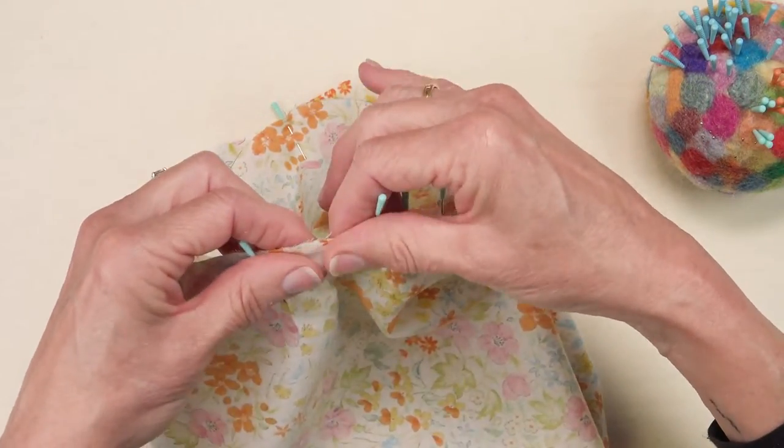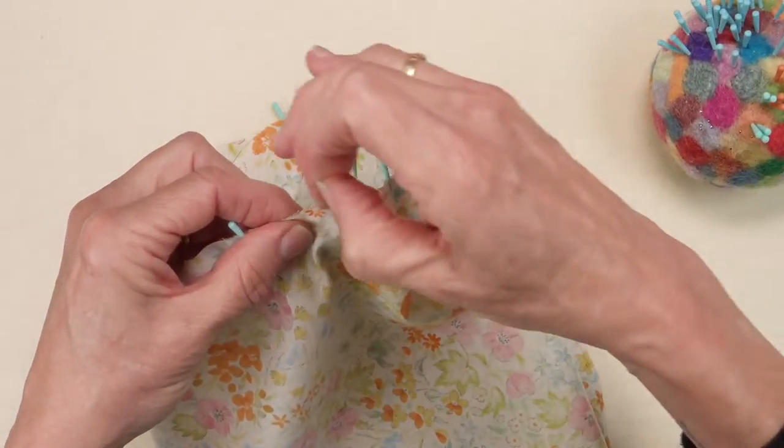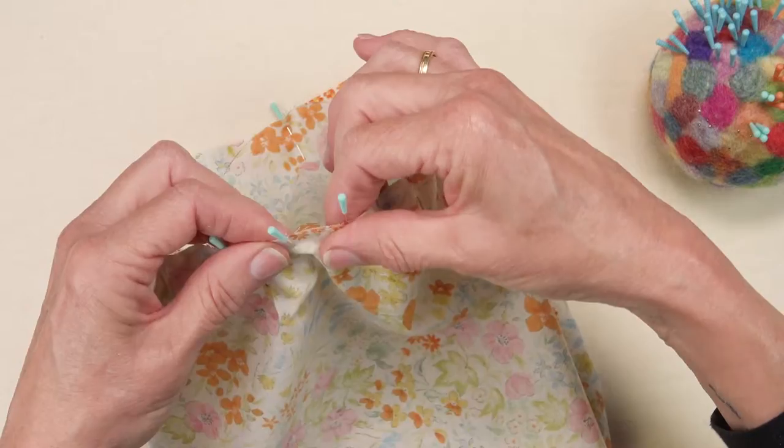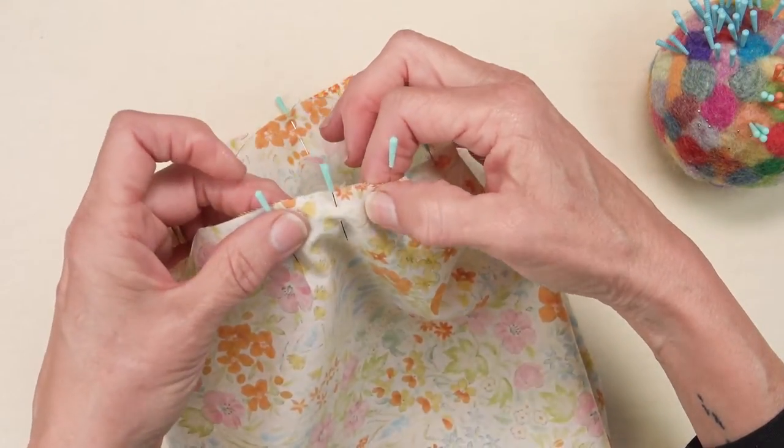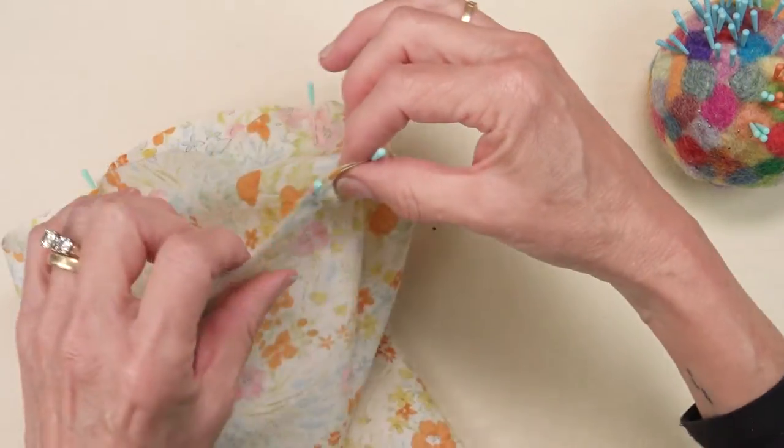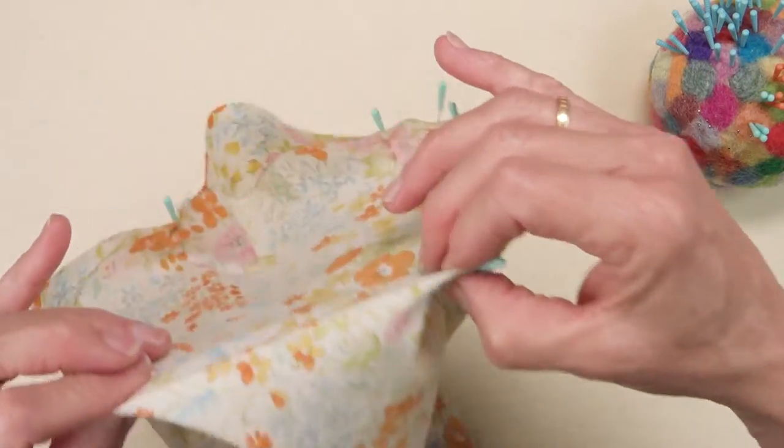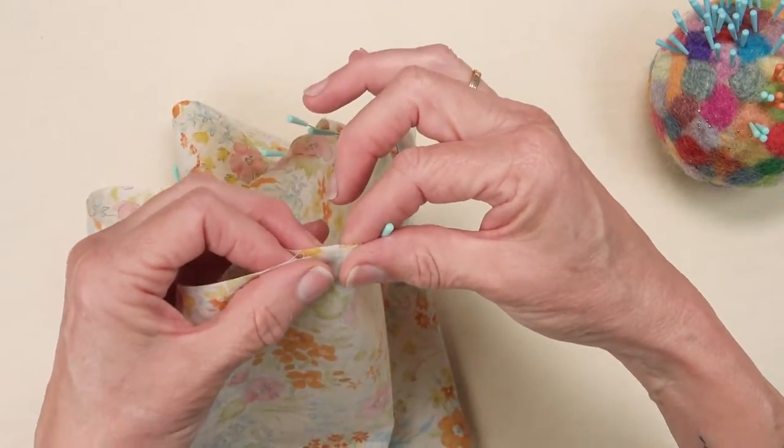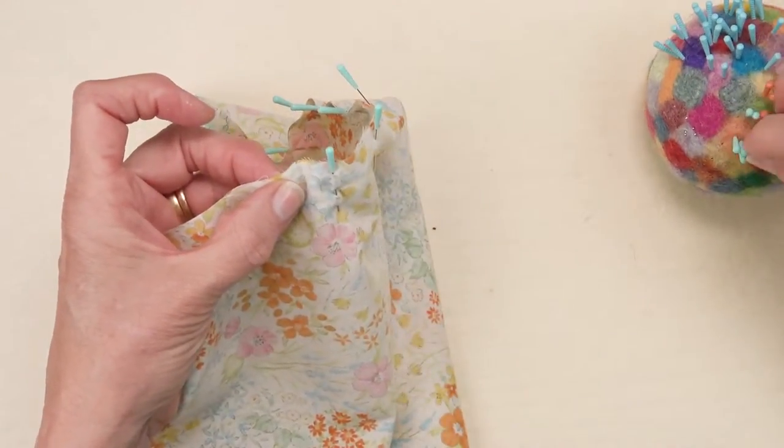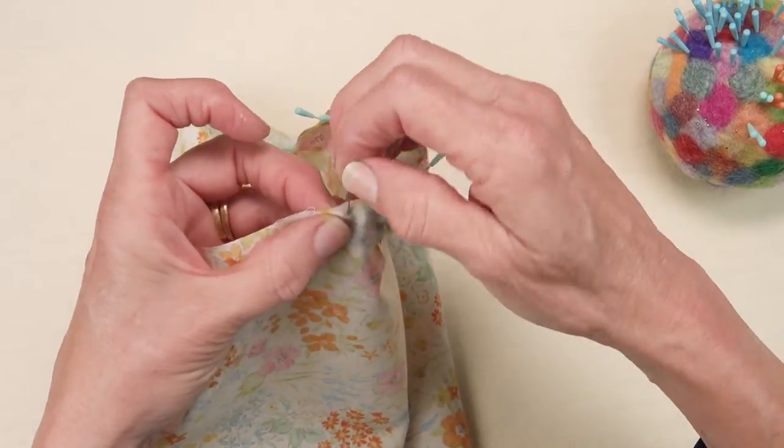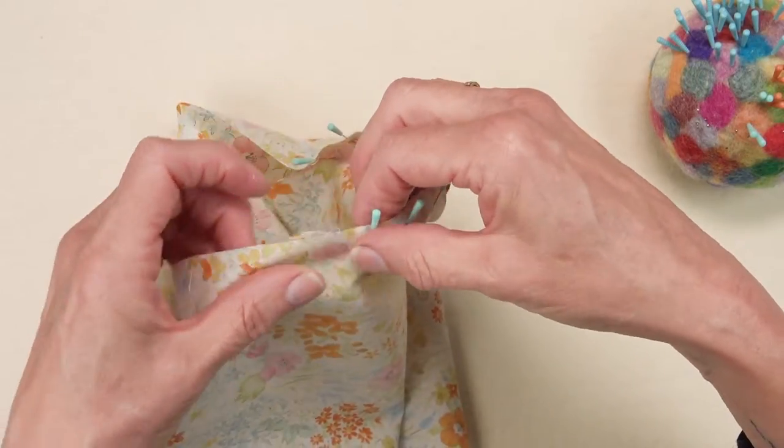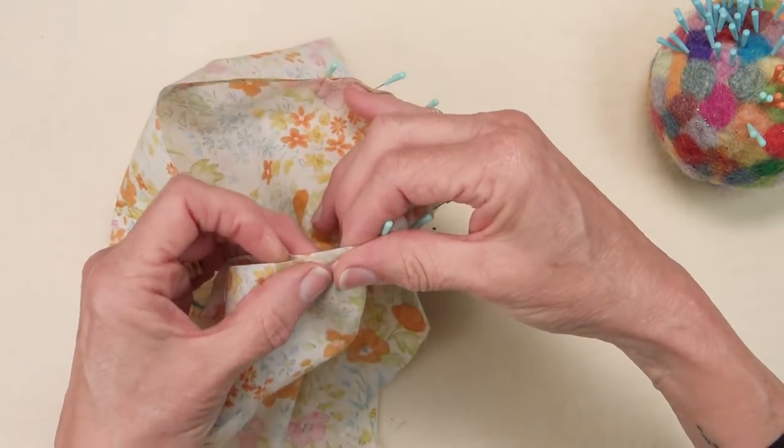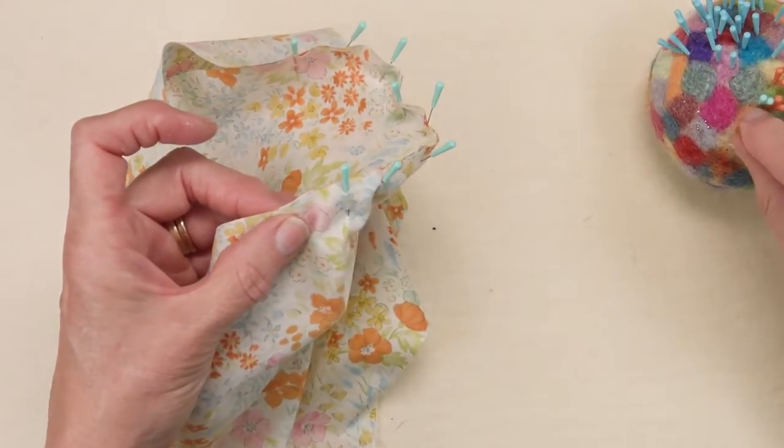If you need to you can use more pins to distribute any fullness neatly. Once I finish pinning the bottom of the bag to both the lining and the outside of the bag, I will take this to my sewing machine and very carefully sew around the bottom with a quarter inch seam allowance.